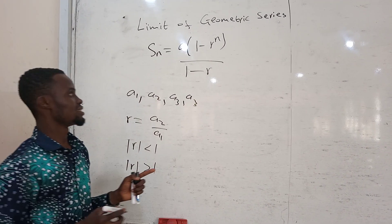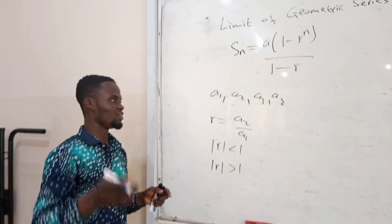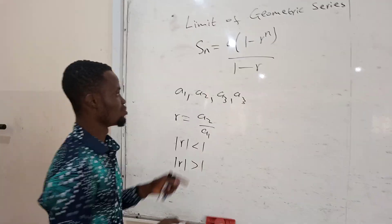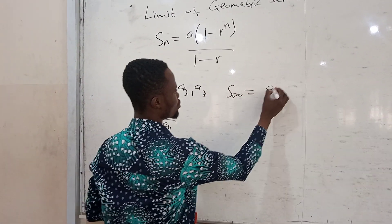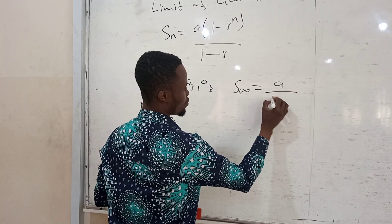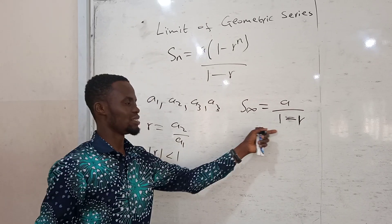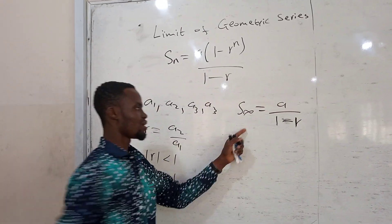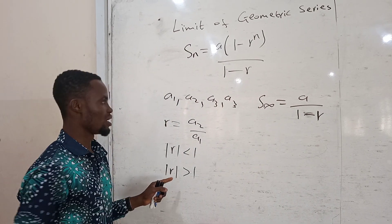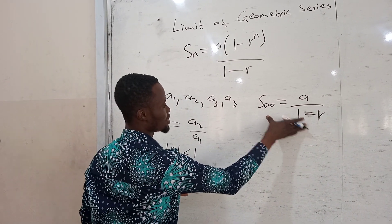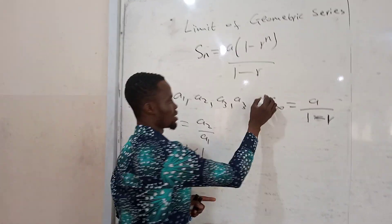Another important thing is the sum to infinity. The sum to infinity is equal to a divided by 1 minus r. This sequence exists whenever the geometric sequence converges.